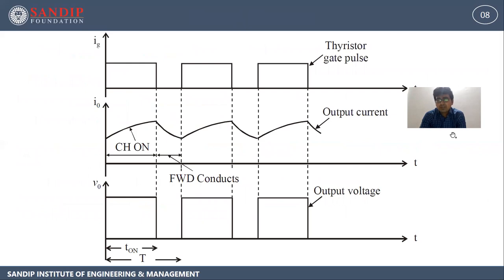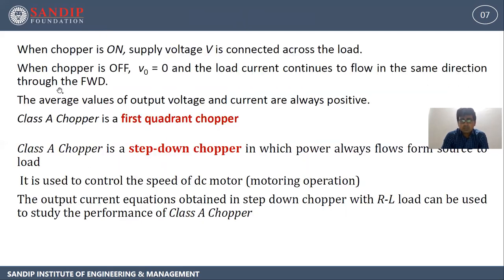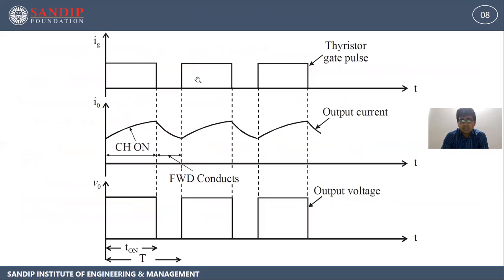This is the graph. We are using the SCR over here, as you can see in the circuit. This is the SCR, having a gate. Even if we would have used MOSFET or IGBT, it would still have the gate and we need to trigger it. So this is the gate pulse. Once it is triggered, we are going to get the output current, and for that we will be getting the output voltage. During T-on we will be getting the output; during T-off we won't get the output.